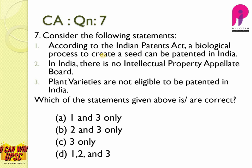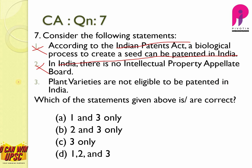Question number 7: Consider the following statements. According to the Indian Patents Act, a biological process to create a seed can be patented in India — no. Actually, seeds, plants, trees and their biological processes cannot be patented in India. In India, there is no Intellectual Property Appellate Board — this is wrong because India does have an Intellectual Property Appellate Board. Plant varieties are not eligible to be patented in India — yes, this is correct. So the answer is C, statement 3 only.